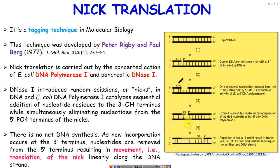The literal meaning of nick translation is that where DNase I created the nick, DNA polymerase I is elongating, and the nick is moving because of the 5' exonuclease activity of DNA polymerase I. So the nick is translating — it is moving linearly along the DNA strand.